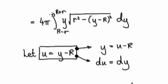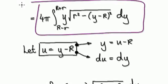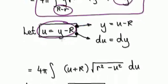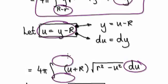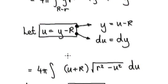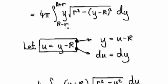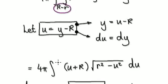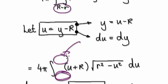Currently we are integrating with respect to y from here to here. Because we made this substitution, we are now in the du world. So we need to make the adjustment to the limits. Don't forget, we are integrating from capital R minus r to capital R plus r. So basically we are trying to make the adjustment to the lower and upper limits.